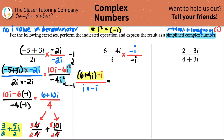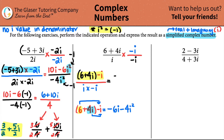Working with the numerator: six plus four i, all multiplied by negative i. We have to be fair — six times negative i is negative six i, and four i times negative i gives negative four i squared since we picked up both i values. So the top is negative six i minus four i squared.